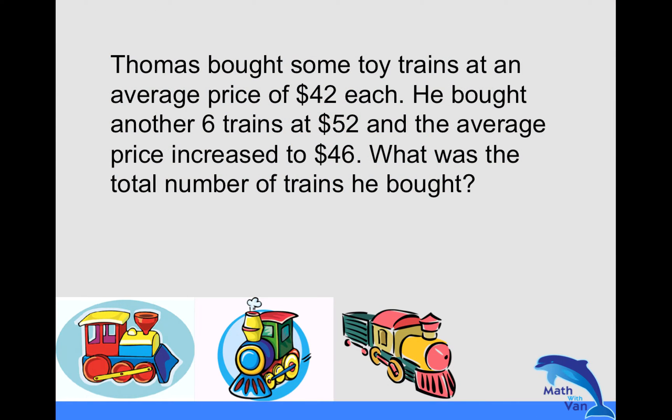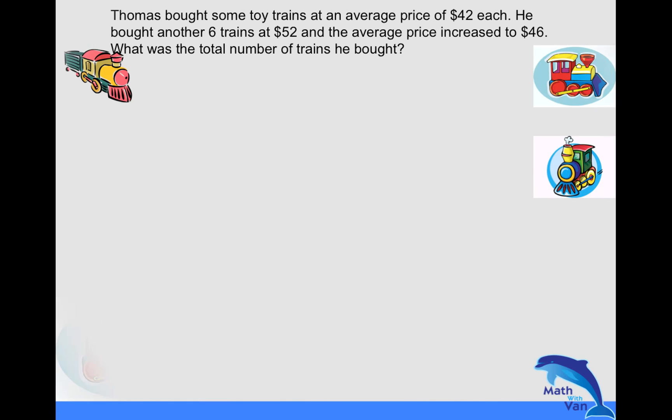Let's take a look. Thomas bought some toy trains at an average price of $42 each. He bought another six trains at $52 and the average price increased to $46. What was the total number of trains he bought?